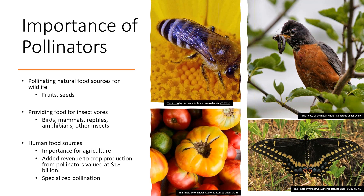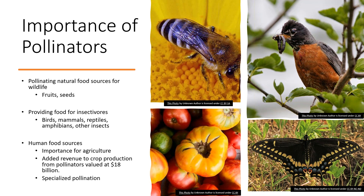Native pollinators can do specialized pollination. If you love tomatoes, potatoes, blueberries, or eggplant, all of these need a specialized type of pollination called buzz pollination, which is only done by our native species. European honeybees can't do buzz pollination, so species like bumblebees are needed to pollinate things like tomatoes.